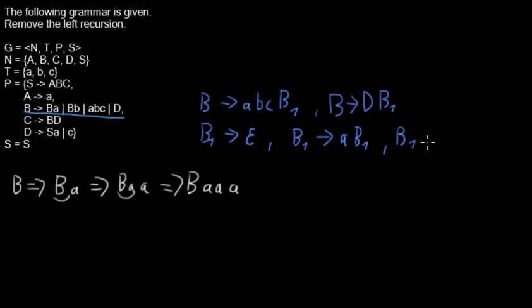Now let's have a look at how those new rules work to generate the same strings. Let's say this rule B could terminate by those non-terminal D. So this is the one that we also want to derive with the new rules.